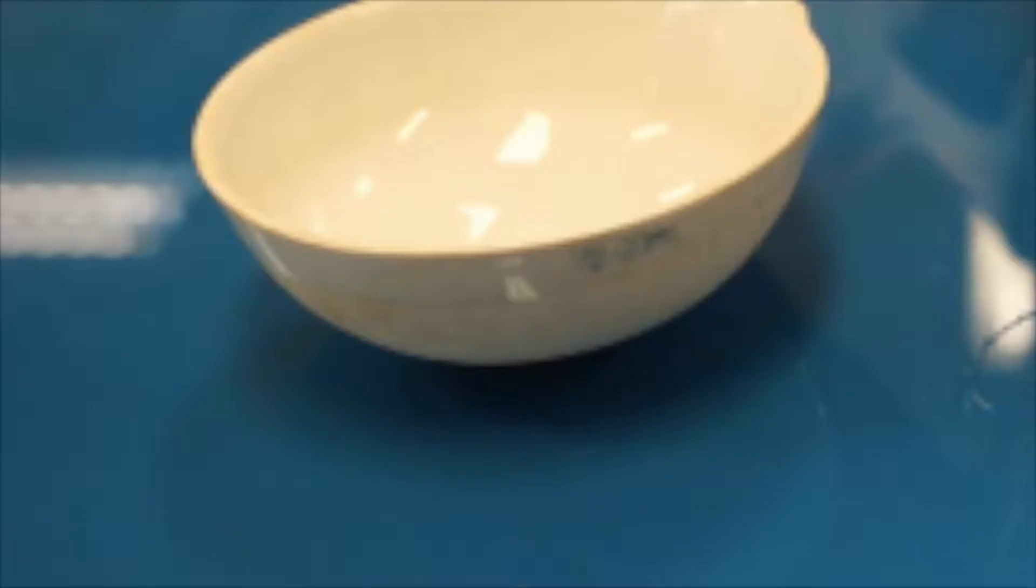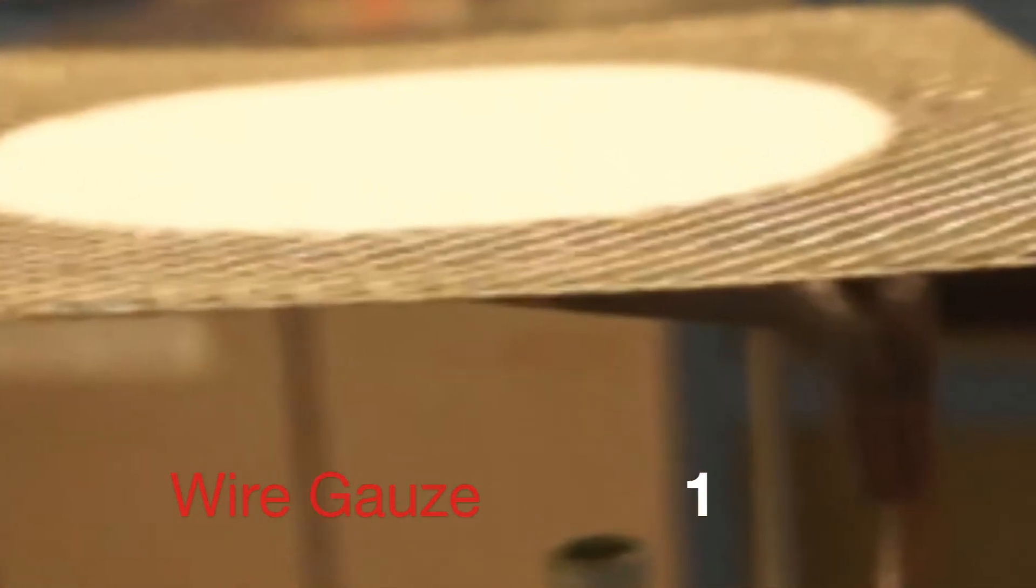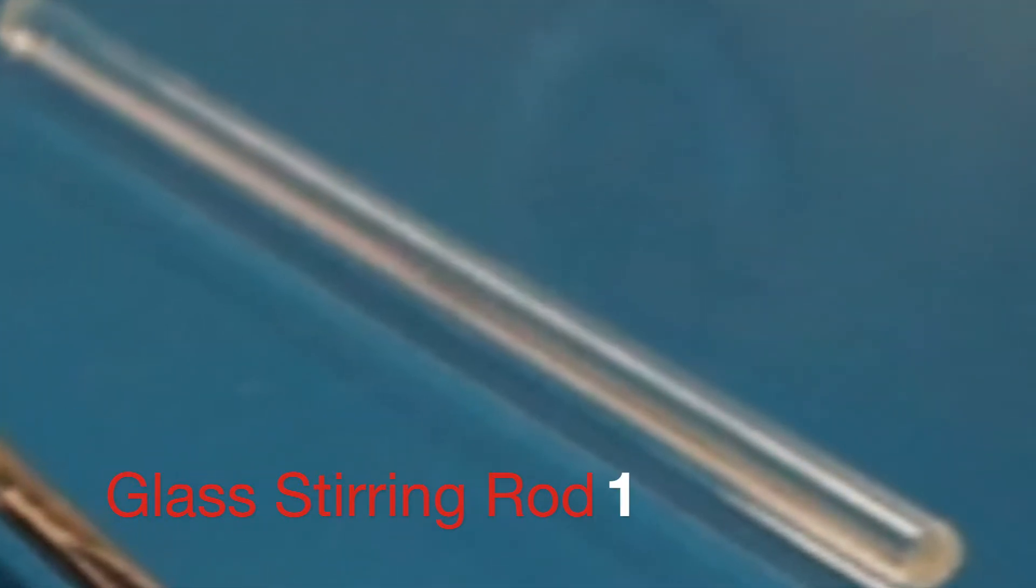Hey viewers, No Minds on Chemistry here. Today we are going through the separation technique Evaporation to Dryness. We will need a tripod stand, an evaporating dish, a wire gauze, a Bunsen burner, and a glass stirring rod.